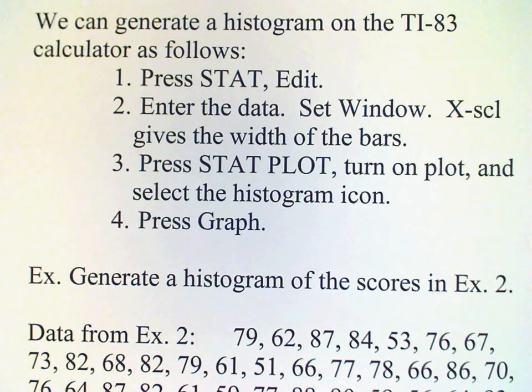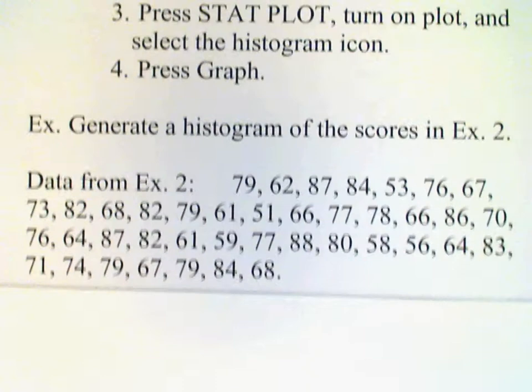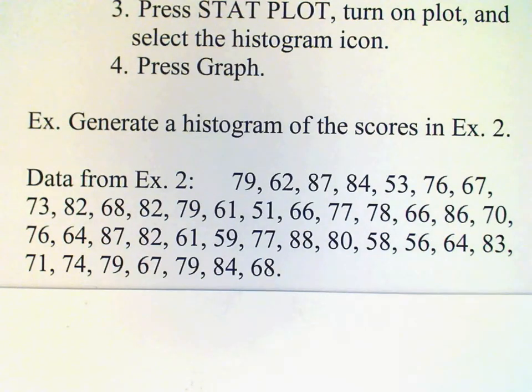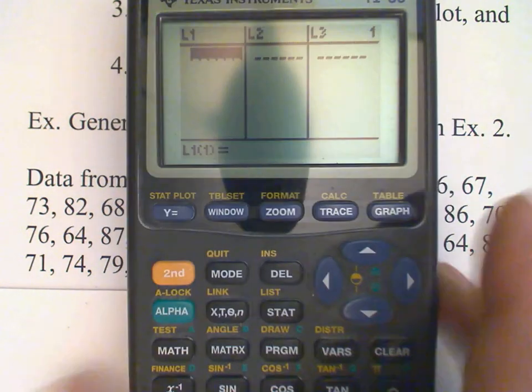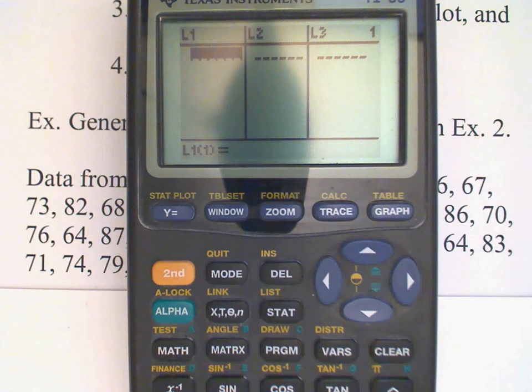As an example, we're going to generate a histogram for those test scores that we looked at in example two. So I need to enter 79, 62, 87, and so on in my calculator. So just press 79, enter.